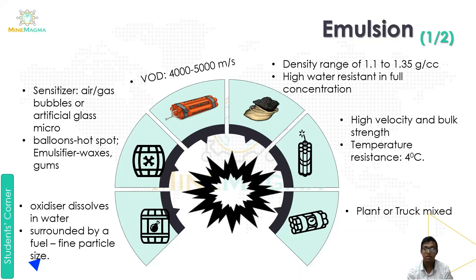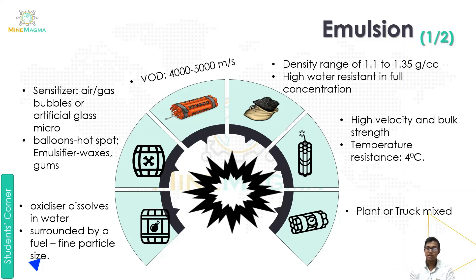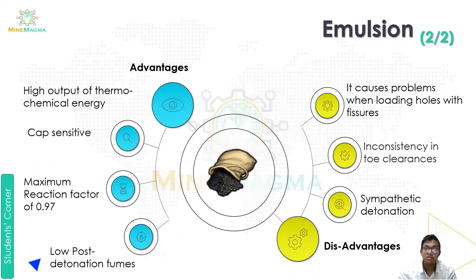The density range of emulsion is 1.1 to 1.35 grams per cubic centimeter. It has high water resistance in full concentration, high velocity and bulk strength. It can resist temperatures down to 4 degrees Celsius, and it is manufactured both in a plant or truck, as well as in a base configuration.